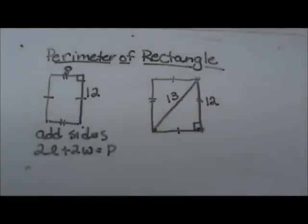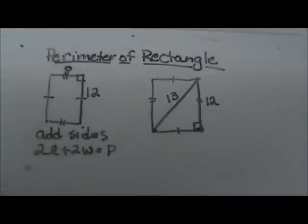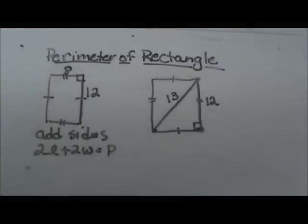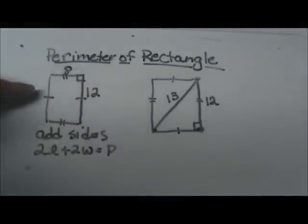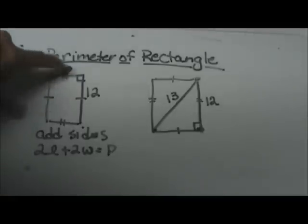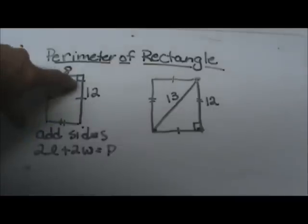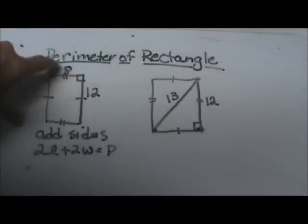Hi, welcome to Moo Moo Math. Today we are going to look at finding the perimeter of a rectangle. Here is a rectangle. A rectangle has the properties of the opposite sides being congruent and four right angles.